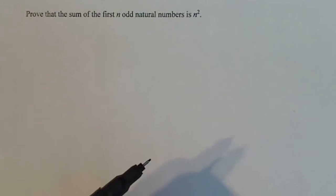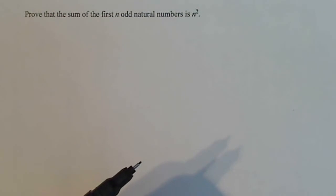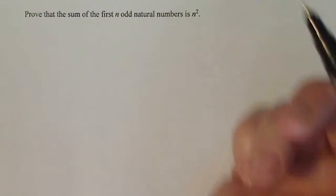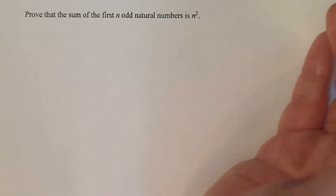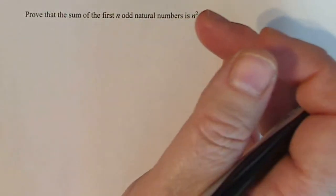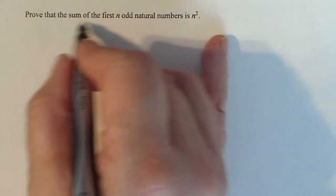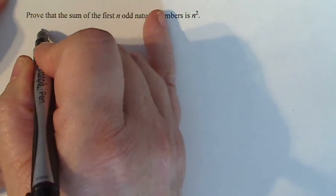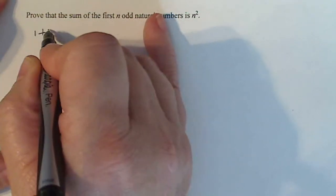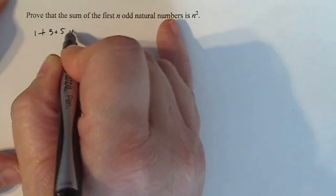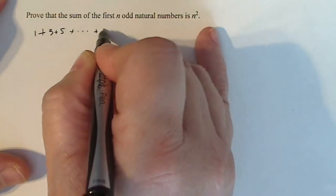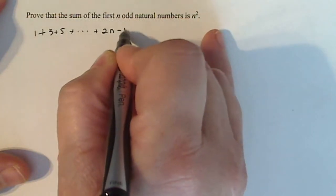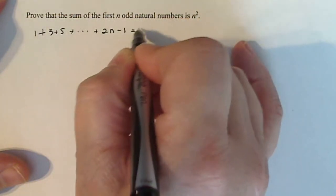So we have to prove that the sum of the first n odd natural numbers is n squared. That's what it says in words. Let's actually write it out in math lingo. So basically, if I have 1 + 3 + 5 + ... + (2n - 1), what they're saying is that's n squared.